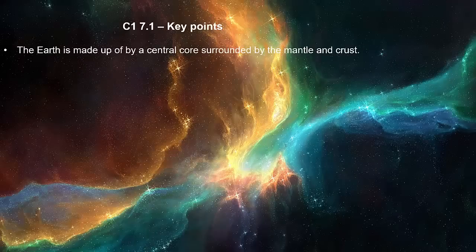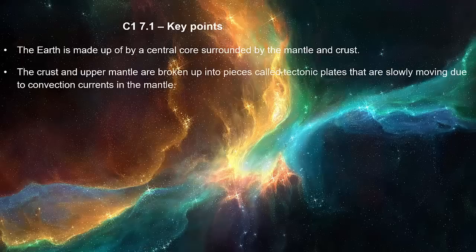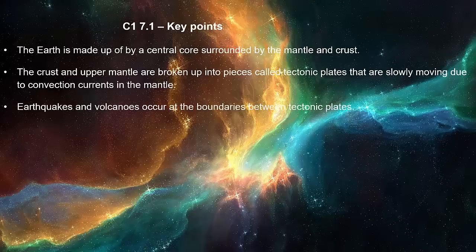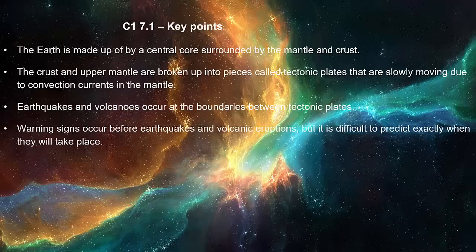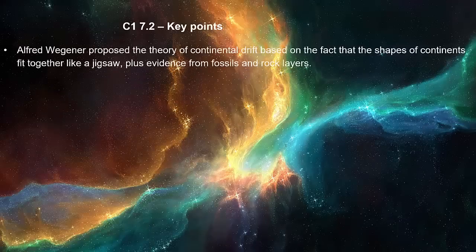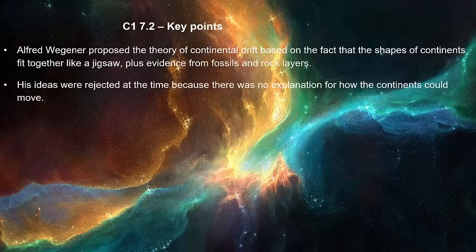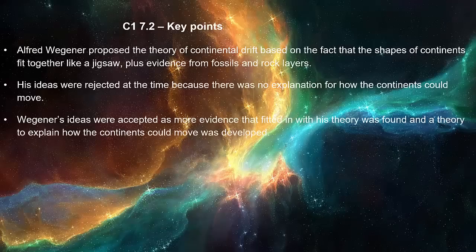The earth is made up of a central core surrounded by the mantle and crust. The crust and upper mantle are broken up into pieces called tectonic plates and are slowly moving due to convection currents in the mantle. Earthquakes and volcanoes occur at the boundaries between tectonic plates. Warning signs occur before earthquakes and volcanic eruptions, but it is difficult to predict exactly when they will take place. Alfred Wegener proposed the theory of continental drift based on the fact that the shape of continents fit together like a jigsaw, plus evidence from fossils and rock layers. His ideas were initially rejected because there was no explanation for how the continents could move, but were later accepted as more evidence fitted in with his theory.